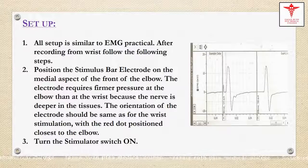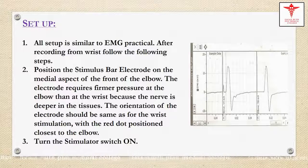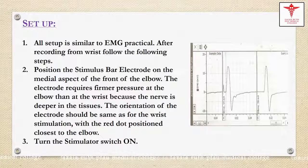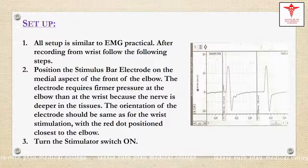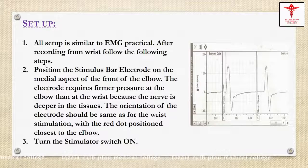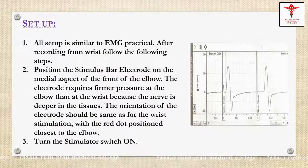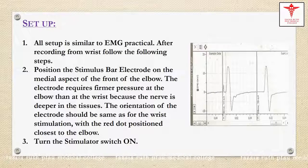All setup is similar to the EMG practical. After recording from the wrist, follow the following steps. Position the stimulus bar electrode on the medial aspect, or the front of the elbow. The electrode requires firmer pressure at the elbow than at the wrist because the nerve is deeper in the tissues. The orientation of the electrode should be the same as for the wrist stimulation, with the red dot positioned closest to the elbow.